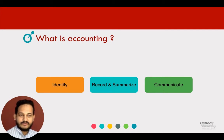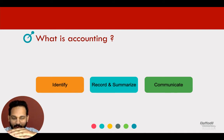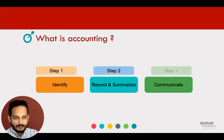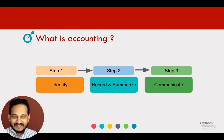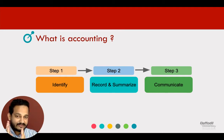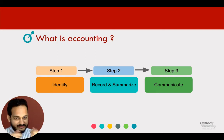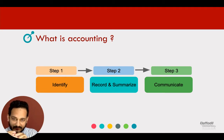The final process is to communicate. We need to record, summarize, and communicate. Process means a set of activities in a sequential flow — step one, step two, step three. That sequential flow is what we call a process. So we identify, then record and summarize, then communicate. That sequential flow of activities is accounting.